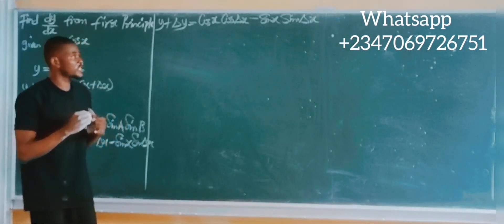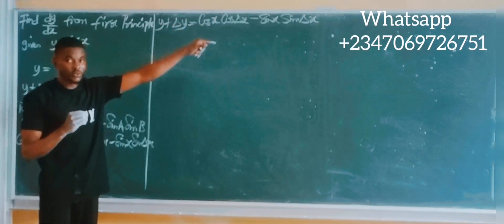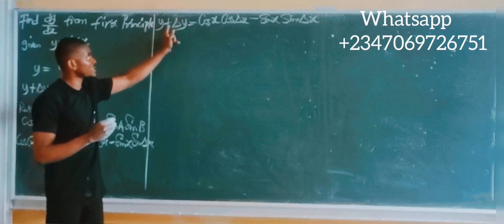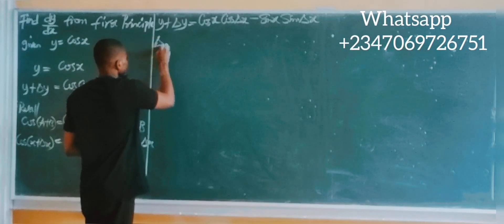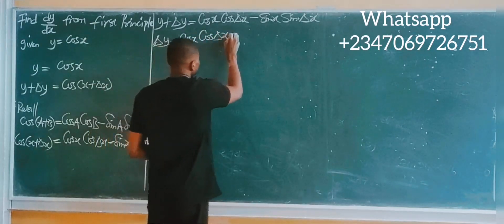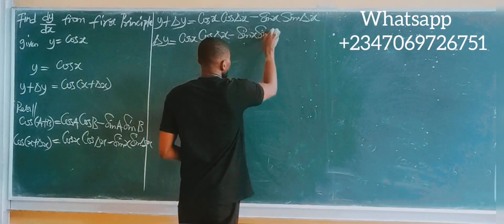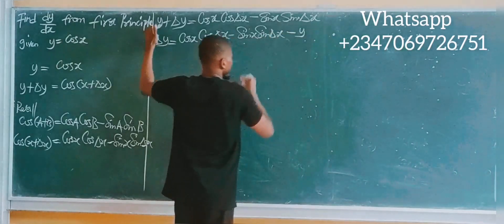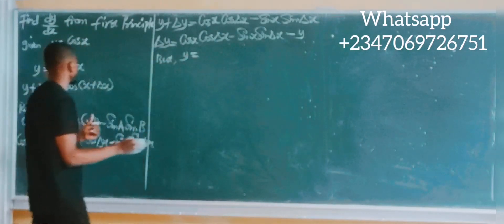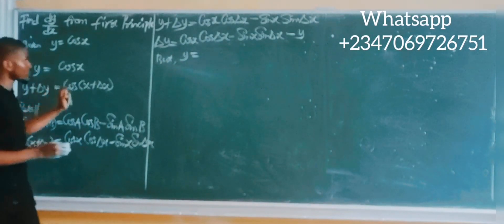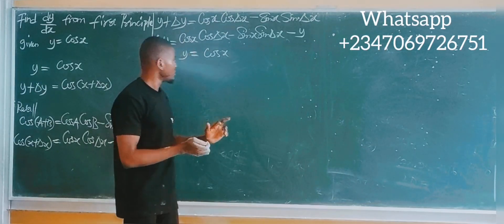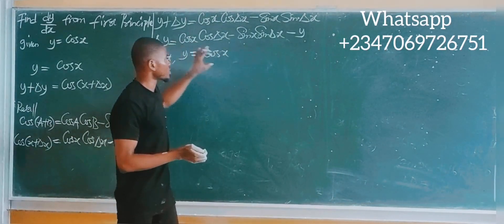At this point, all you need to do is send y over to the other side of the equation. Since y is on this side, crossing over it becomes negative, so we are left with Δy. So Δy equals cos x cos(Δx) minus sin x sin(Δx) minus y. Now remember from the question y equals cos x, so in place of y I will write cos x.